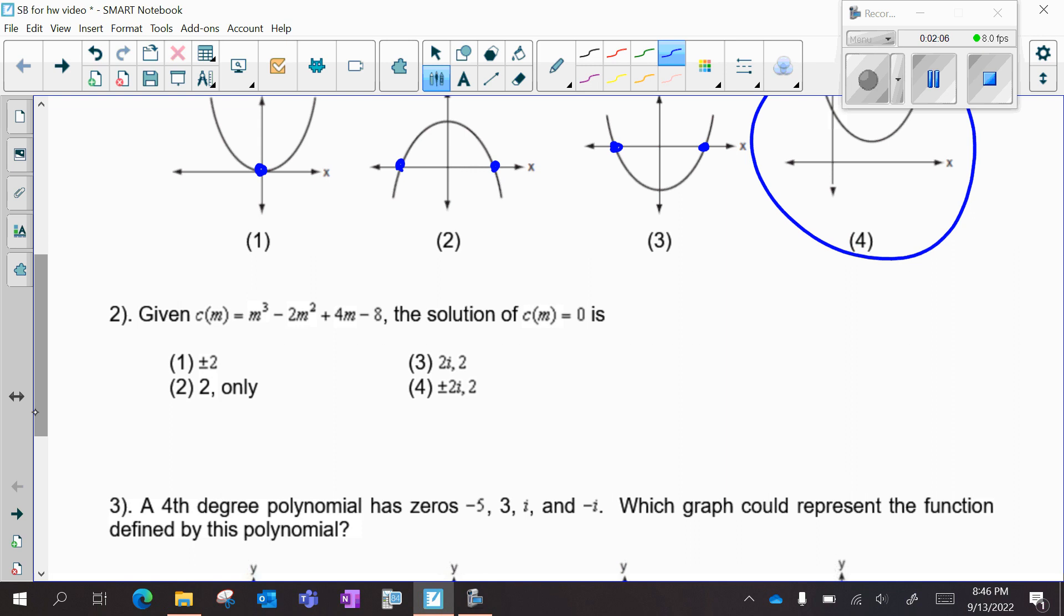Number two. Given C of m equals m cubed minus 2m squared plus 4m minus 8, the solution of C of m equals 0 is - so I see another vocab word, this means roots, zeros, or x-intercepts if they're real.